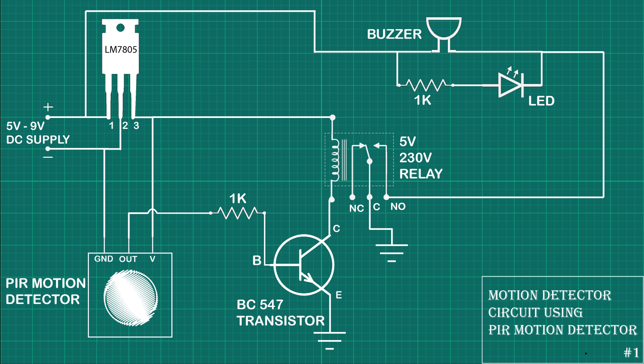So when the transistor turns on, it turns on the relay circuit and the relay turns on the main circuit of buzzer and LED, and we get the output.